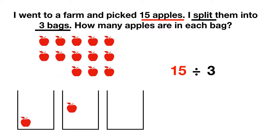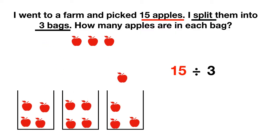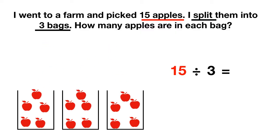If you were to draw this out and put the apples one by one into the bags, you could figure out how many are in each. You could see that in each bag there are five apples. This is the concept of division, but there's also vocab that goes along with it. This 15, which represented the total number of apples I had, is called the dividend.